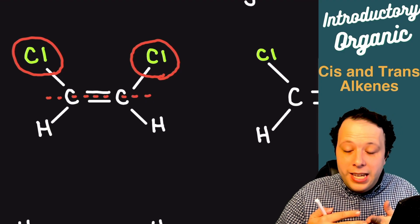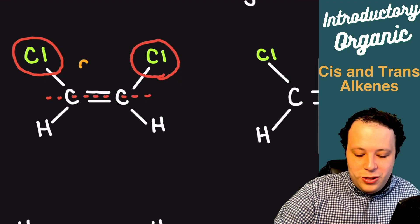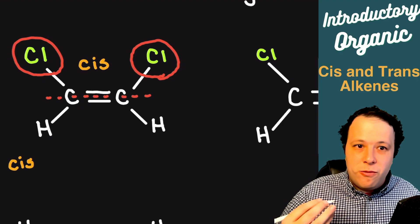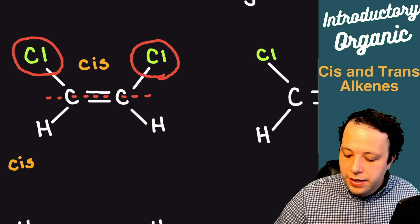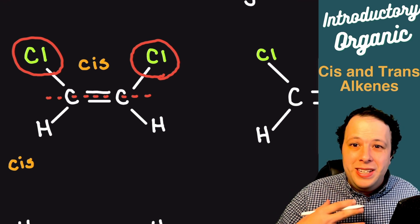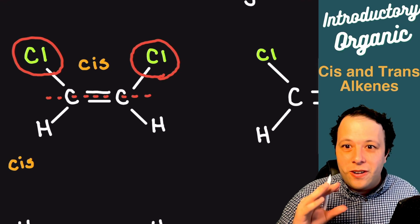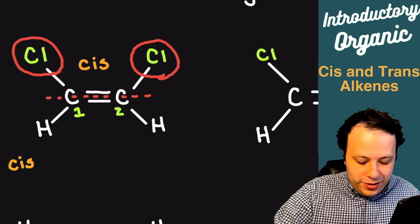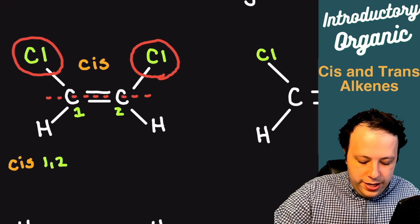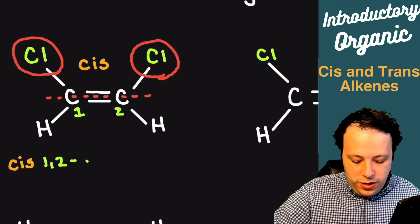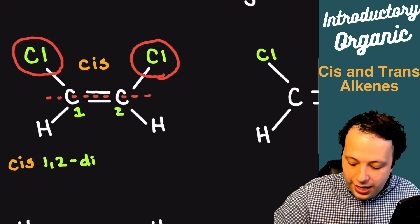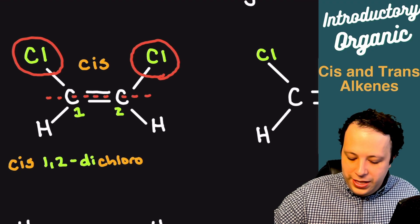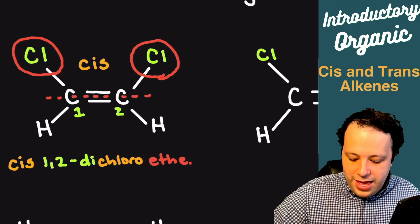We see both these chlorines are together on the same side — being that they are the same side, that refers to cis. So we'd first write cis in the name. The next part is naming and numbering our groups, which are our chlorines. We have two of them, and they are at positions one and two. Being that there are multiple, we say di, giving us cis-1,2-dichloroethene.